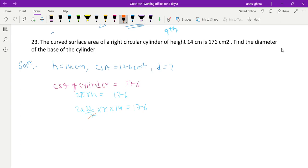Here 7 cancels out. So 2 × 22 × 2 × r = 176. Now 44 × 2 = 88, so 88 × r = 176.